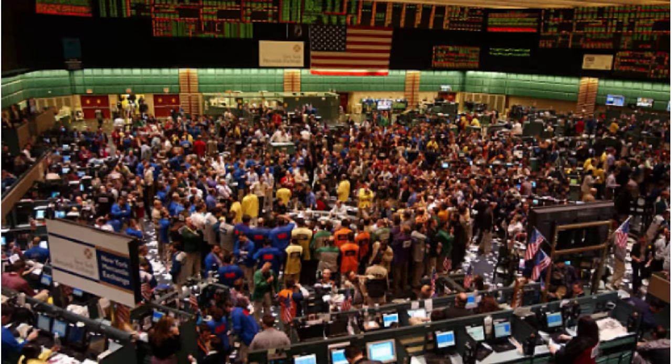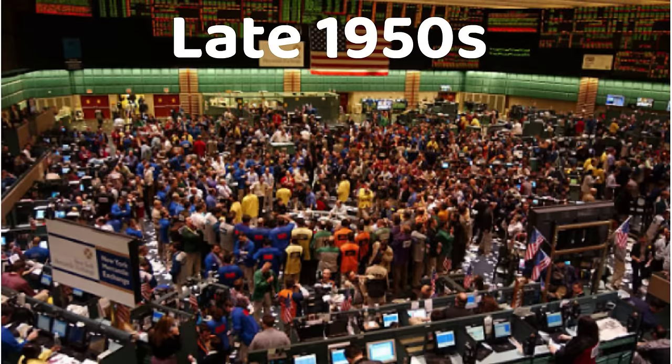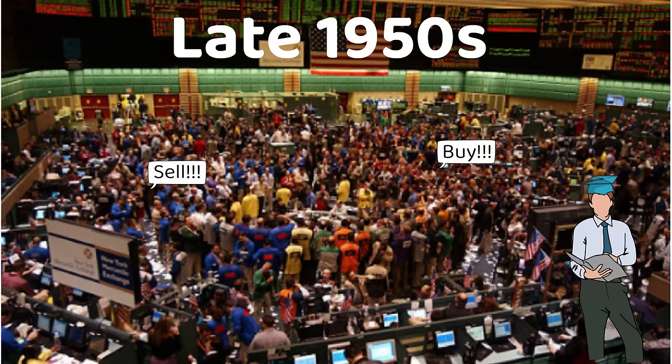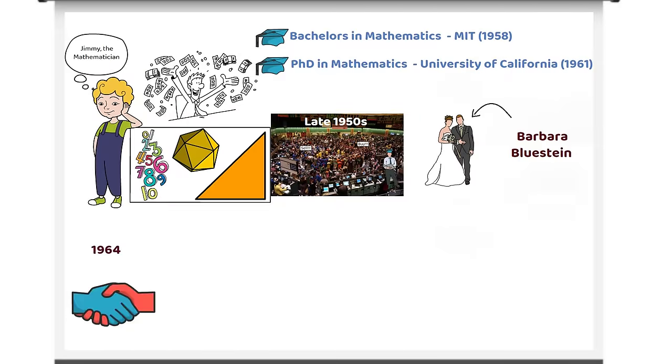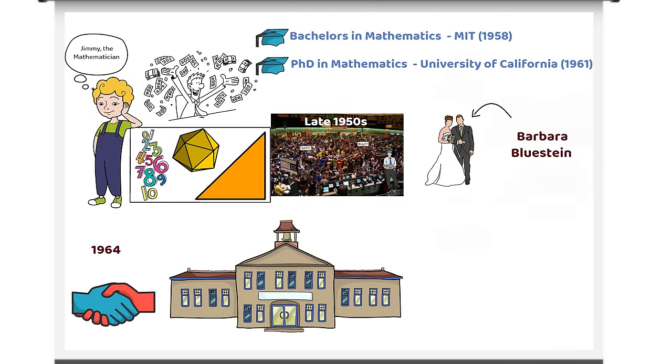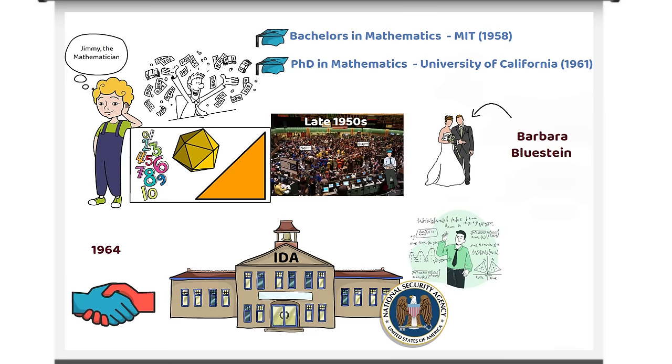Simons' first and short-lived encounter with the financial markets was in the late 1950s, when he was working on his doctoral thesis. In 1964, Simons took an offer from the Institute for Defence Analyses, or the IDA, an elite research organization that hired mathematicians from top universities to assist the National Security Agency.